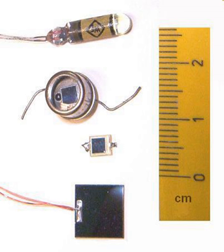Either type of photosensor may be used for light measurement, as in camera light meters, or to respond to light levels, as in switching on street lighting after dark. Photosensors of all types may be used to respond to incident light, or to a source of light which is part of the same circuit or system. A photodiode is often combined into a single component with an emitter of light, usually a light-emitting diode, either to detect the presence of a mechanical obstruction to the beam, or to couple two digital or analog circuits while maintaining extremely high electrical isolation between them, often for safety. The combination of LED and photodiode is also used in many sensor systems to characterize different types of products based on their optical absorbance.